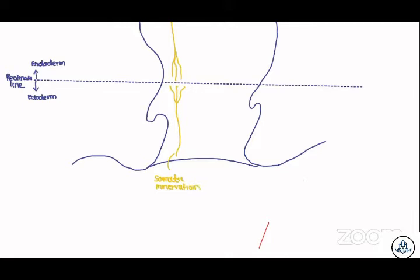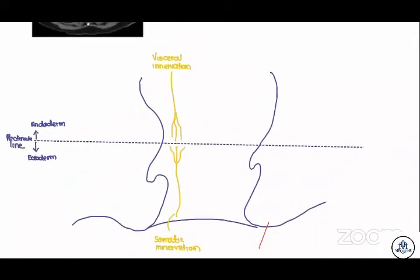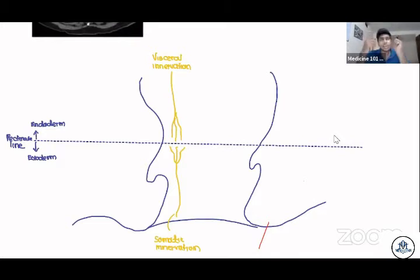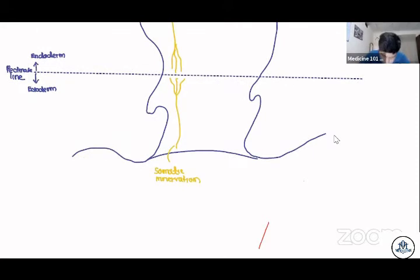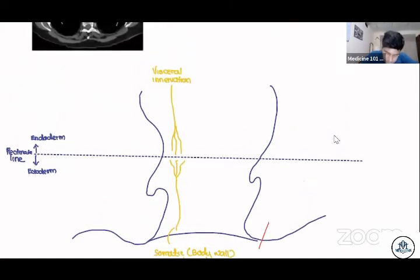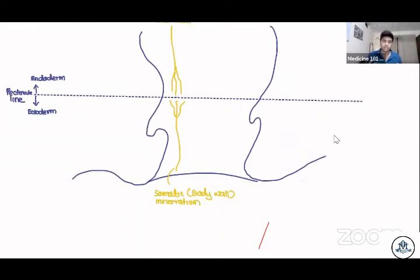The region below the pectinate line will be somatic innervation. Can someone tell me the meaning of somatic? Somatic means body wall. It innervates the skeletal muscles — it is the body wall. Visceral means inside. So visceral means inside, somatic means outside — the body wall.